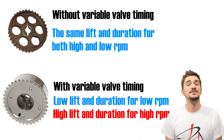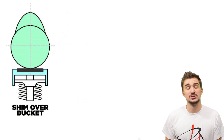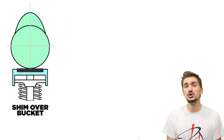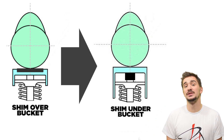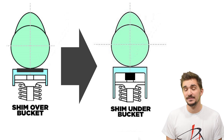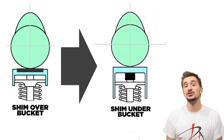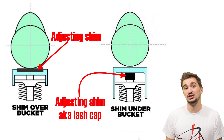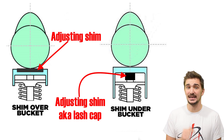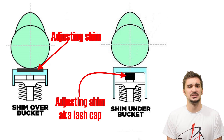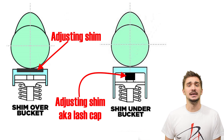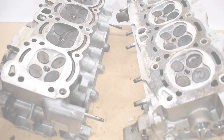When running very aggressive camshaft specs on an engine with a shim over bucket system, many engine builders will choose to convert to a shim under bucket system — something you can very often see on motorcycle engines that rev very high. A shim under bucket system makes it impossible to adjust valve clearance without removing the camshafts, but the benefit is that it completely eliminates the possibility of the shim popping away from the bucket.